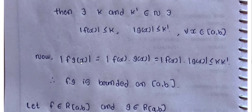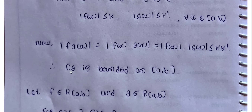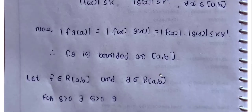Now, mod of fg of x equals mod of f of x into g of x, which equals mod of f of x into mod of g of x. So mod of f of x into mod of g of x is less than or equal to k into k'. Therefore, fg, that is f into g, is also bounded on closed interval [a, b].